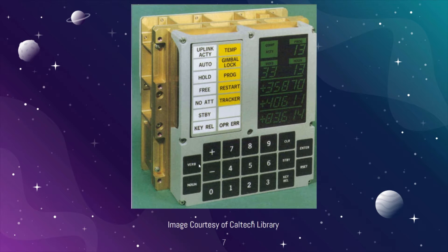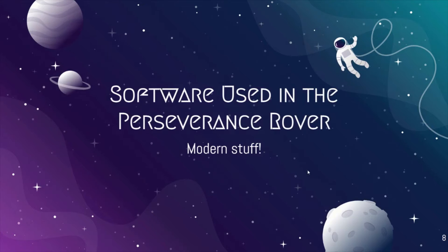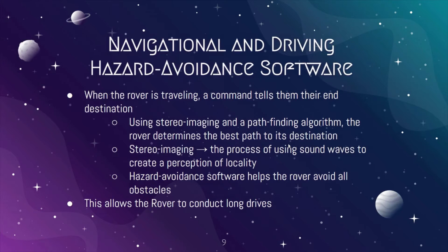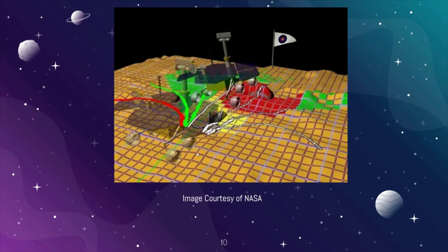This slide provides an image of the Apollo Guidance Computer. Now, let's talk about software used in the actual rover. When we talk about navigation, we have the navigational and driving hazard avoidance software. Basically, when the rover is traveling, a command will tell it what the end destination is, and using stereo imaging — which uses sound waves to create a perception of locality — the rover will determine the best path using a path-finding algorithm. The hazard avoidance software essentially helps the rover avoid all obstacles and conduct long drives.